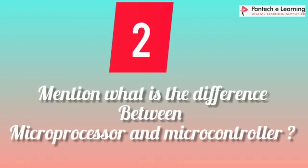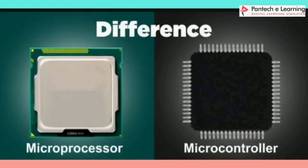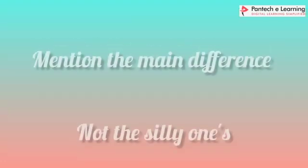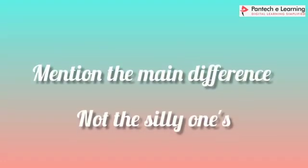Mention what is the difference between microprocessor and microcontroller. A microprocessor is a manager of the resources which lie outside of its architecture. A microcontroller has input/output, memory, etc. built into it and is specifically designed for control. This is the main difference between microprocessor and microcontroller.